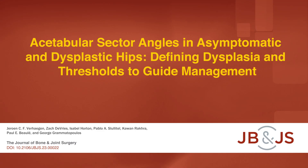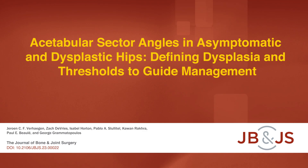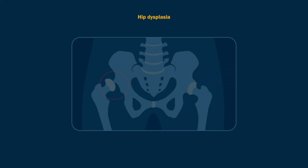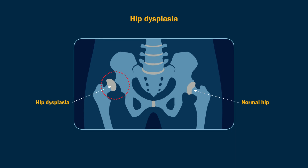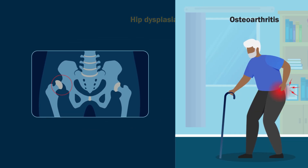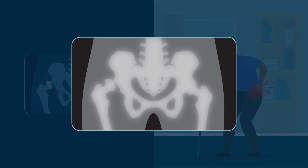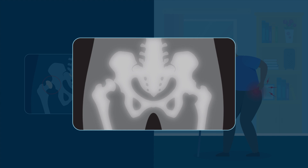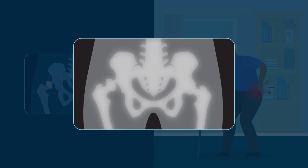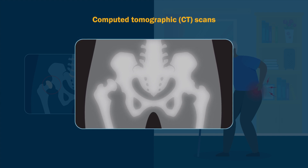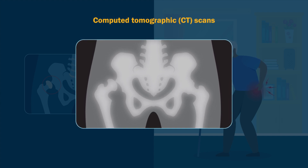This is an audio-visual representation of a study published in the Journal of Bone and Joint Surgery in 2023. Hip dysplasia is known to be a risk factor for osteoarthritis and can be detected by examining acetabular morphology on computed tomographic or CT scans.